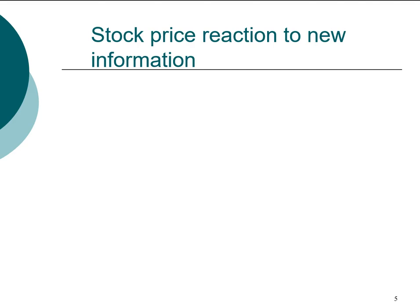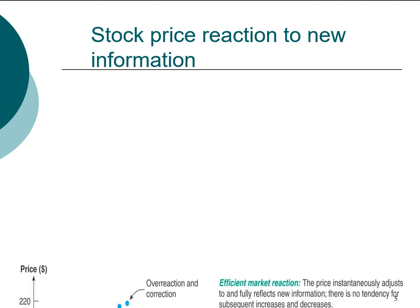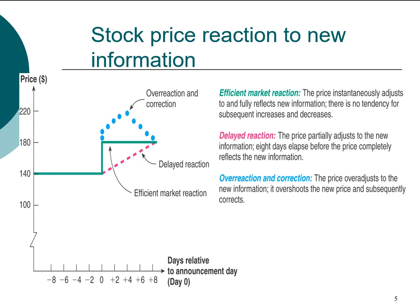Academic researchers determine if the market is efficient by developing experiments to test different hypotheses. One very common experiment is designed to test whether the market is semi-strong form efficient. Researchers track a stock that releases important information on a specific date — day zero — such as the day a company's drug patent gets approved and the FDA approval is announced to the public.